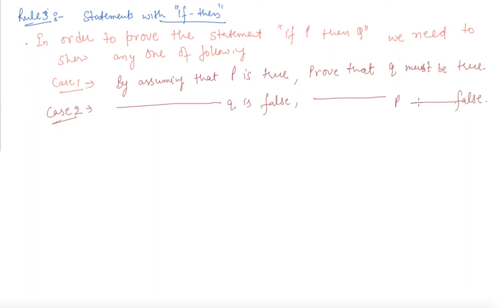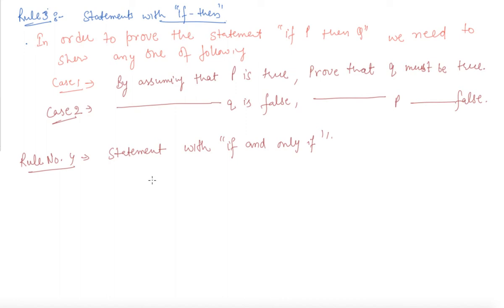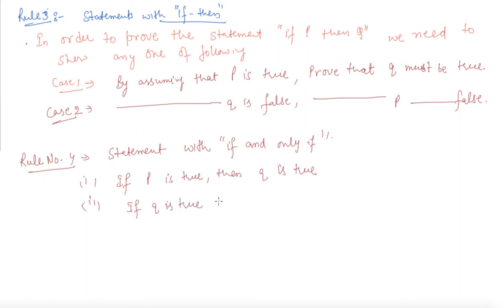These are the steps that we need to follow. Now, rule number four: statement with if and only if. In order to prove that P if and only if Q is true: case one, if P is true then Q is true; case two, if Q is true then P is true.